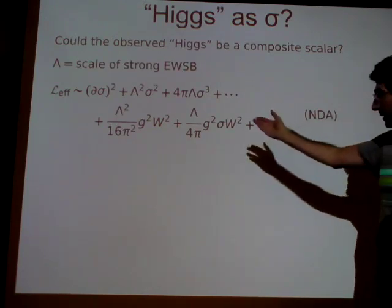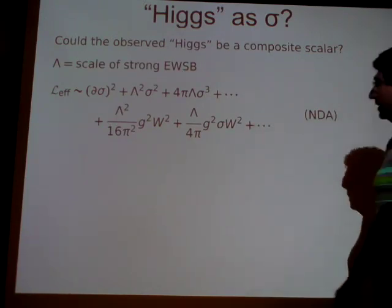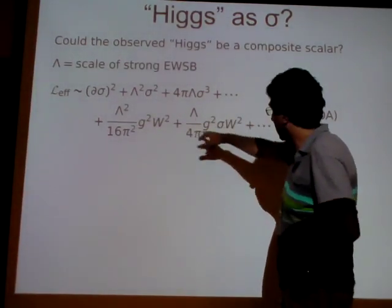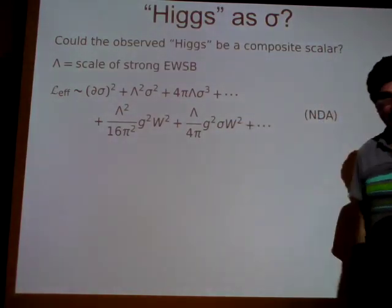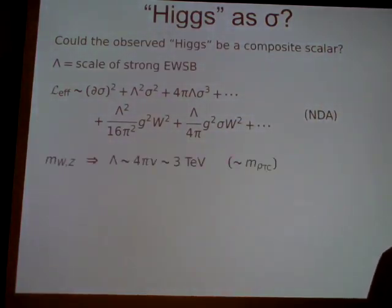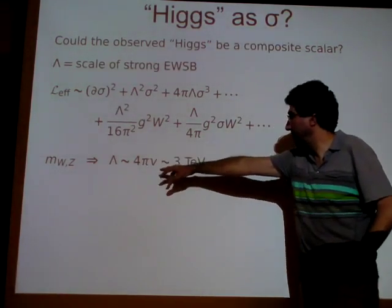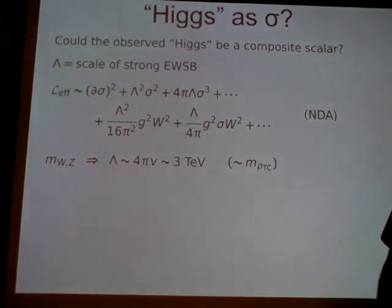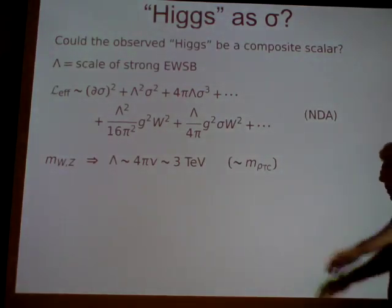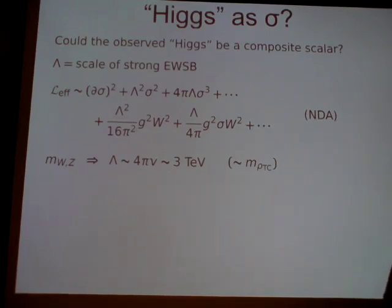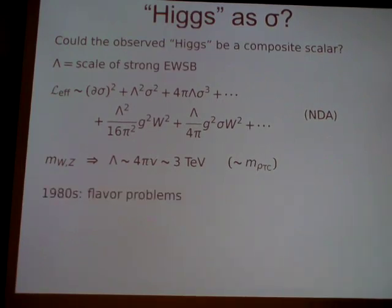This is called naive dimensional analysis, and it contains a mass for the sigma, cubic terms, W and Z masses from strong dynamics, couplings of the sigma to the W's and Z's, and so on. To get the masses of the W's and Z's right, we need the scale lambda to be about 4π v, which is about 3 TeV. That scale of 3 TeV is also what we get by scaling up the rho mass in QCD, which tells us NDA is not a bad estimate.